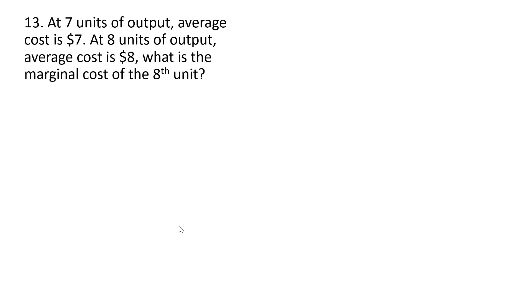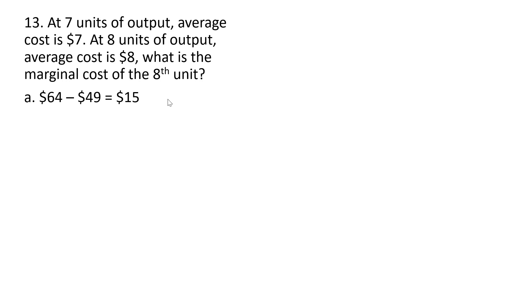Question 13. At seven units of output, average cost is $7. At eight units of output, average total cost is $8. What is the marginal cost of the eighth unit? At seven units of output, total cost is seven times seven, or $49. At eight units of output, total cost is eight times eight, or $64. The difference of $15 represents the marginal cost of the eighth unit — the change in total cost from producing one more unit. Answer choice A is correct.